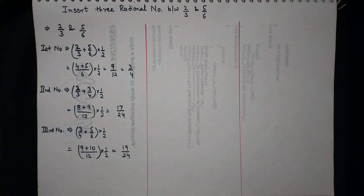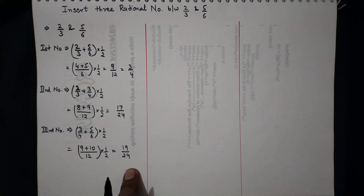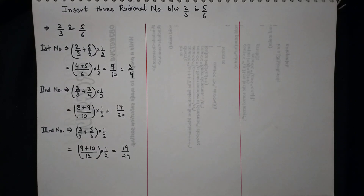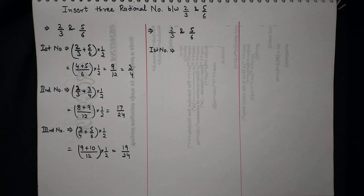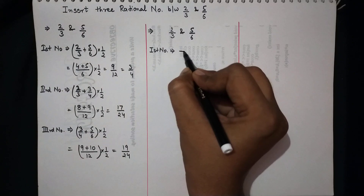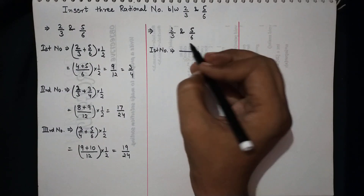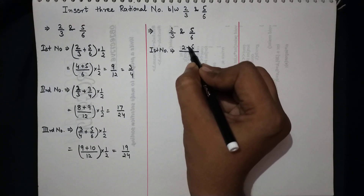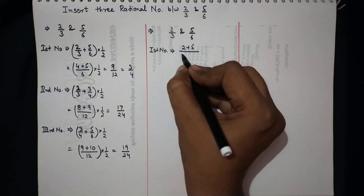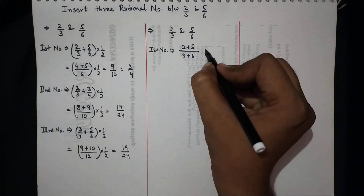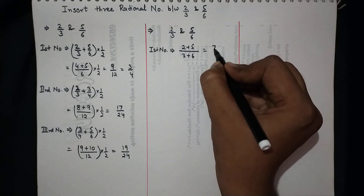The second method is the direct method. To get the first number, we directly add the numerators 2 and 5, and the denominators 3 and 6, to get 7/9. This is the first number.